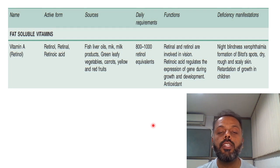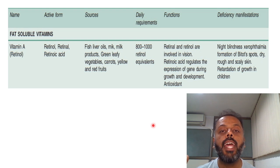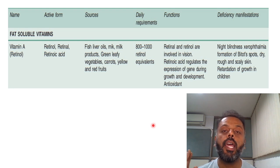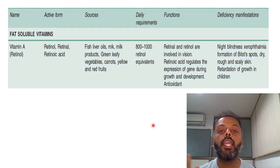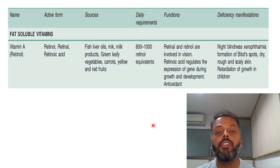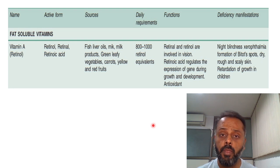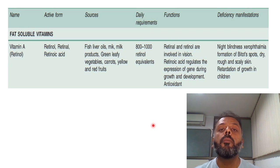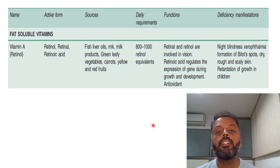Now, what happens if there is a deficiency of vitamin A? The first deficiency manifestation is night blindness — that is, impaired vision during dim light — and there will be an increase in dark adaptation time. If this night blindness is not treated, it will progress to xerophthalmia, in which the conjunctiva and cornea become dry, thick, and wrinkled, and the cornea becomes very dull and hazy, losing transparency due to keratinization.